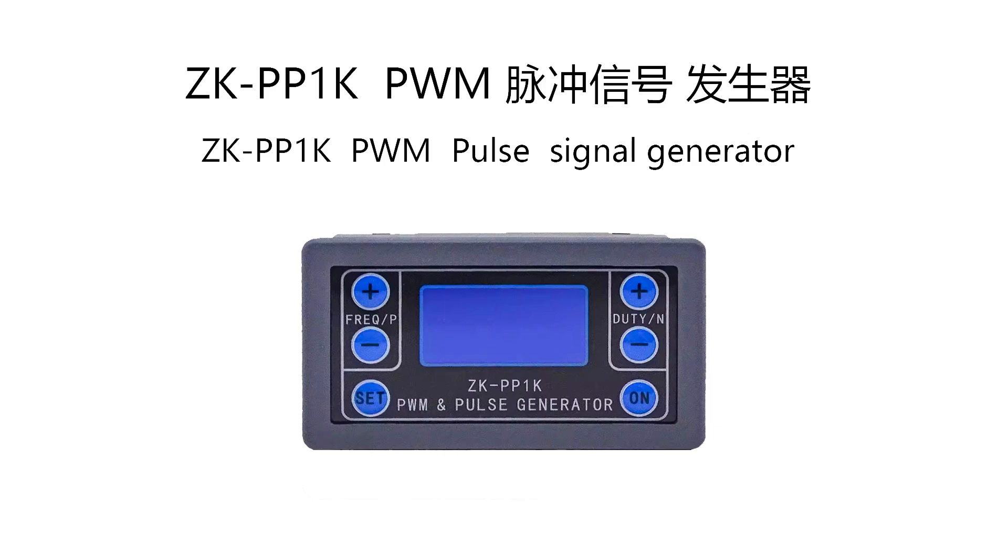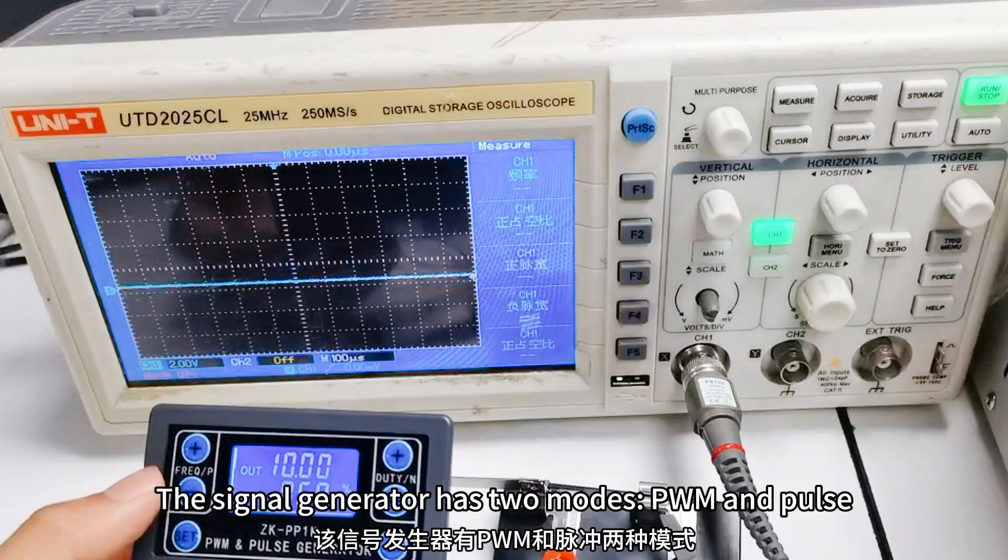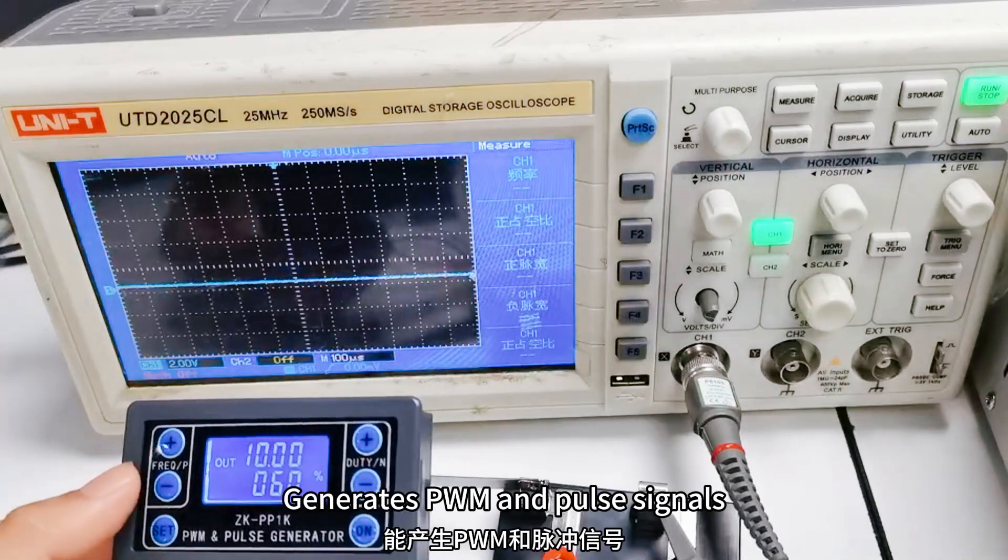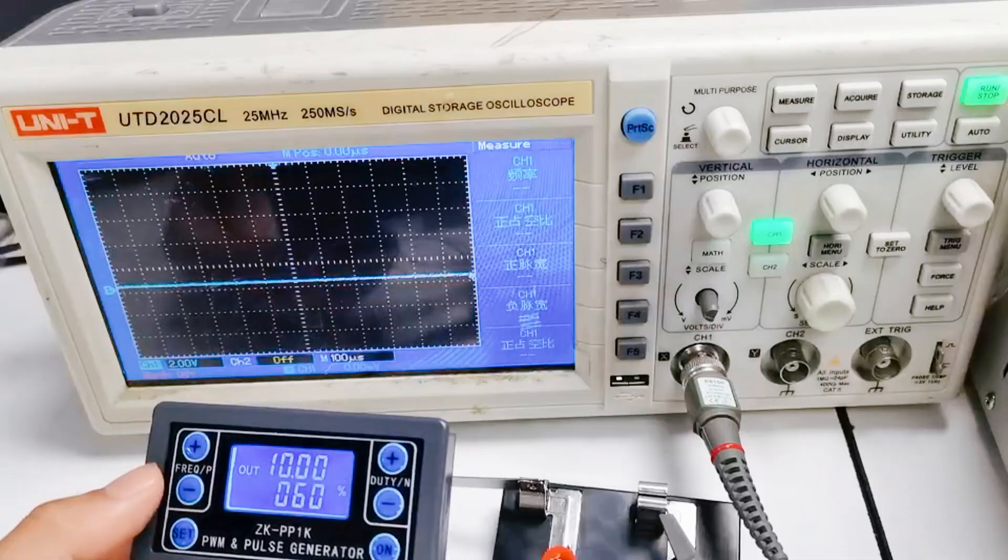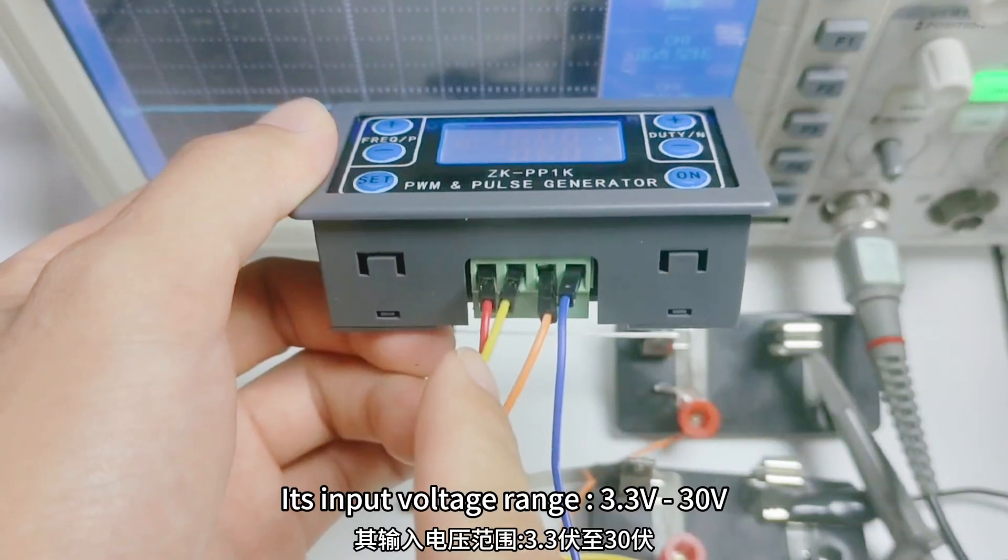ZKPP1K PWM Pulse Signal Generator. The signal generator has two modes: PWM and Pulse. It generates PWM and Pulse signals. Its input voltage range is 3.3V to 30V.